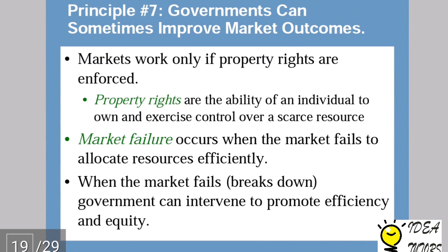The seventh principle is: governments can sometimes improve market outcomes. Markets work only if property rights are enforced. Property rights are the ability of an individual to own and exercise control over a scarce resource. A person can properly use their resource only if they are sure no one will take it forcefully — they must be confident that laws exist to protect their rights. Market failure occurs when the market fails to allocate resources efficiently. There are many examples of public goods which cannot be provided by the market. When the market fails, government can intervene to promote efficiency and equity — intervention should be limited in extent.